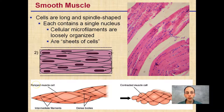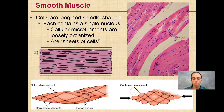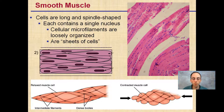A relaxed smooth muscle cell is going to look like this — they're kind of long and spindle-shaped. When they're contracted, they take on this kind of bunched-up, clumpy appearance, versus their normal relaxed spindle shape.